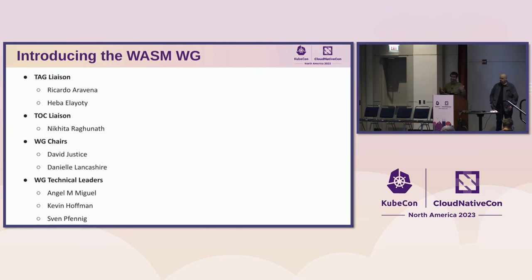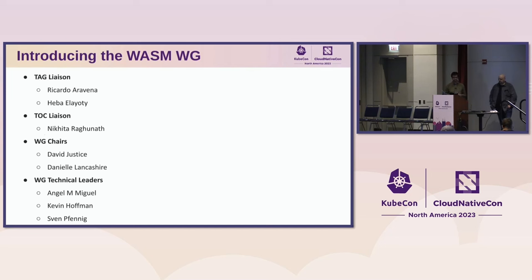With any working group, there are folks who help define and run it. Since it is part of the TAG Runtime, the liaisons are Ricardo and Heber. The TOC liaison is Nikita, and the working group chairs are David, Justice, and Daniel. The technical leaders are Angel, Kevin — Kevin is with us here — and Sven. You can reach out to these folks on the CNCF Slack if you want to have deeper discussions around how you could leverage the working group.